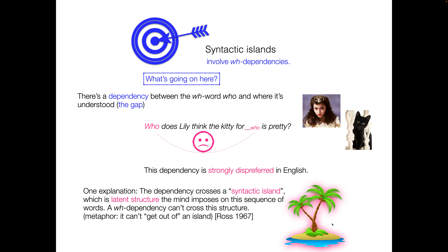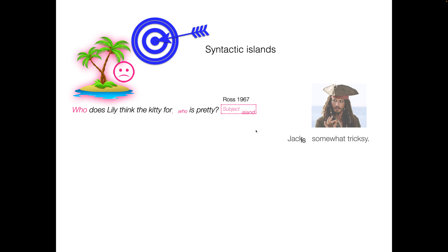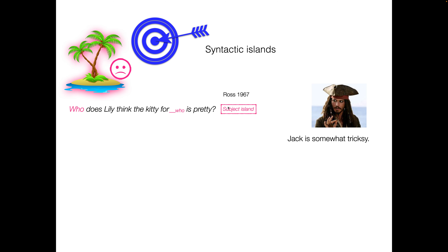The metaphor of why it's called an island: you have a dependency that can't get out of an island. There is no crossing an island — you're surrounded by water on all sides, no one can swim, there is no crossing. That's your metaphor. When you have these latent structures, there are islands that cannot be crossed. This one has been known as a subject island.